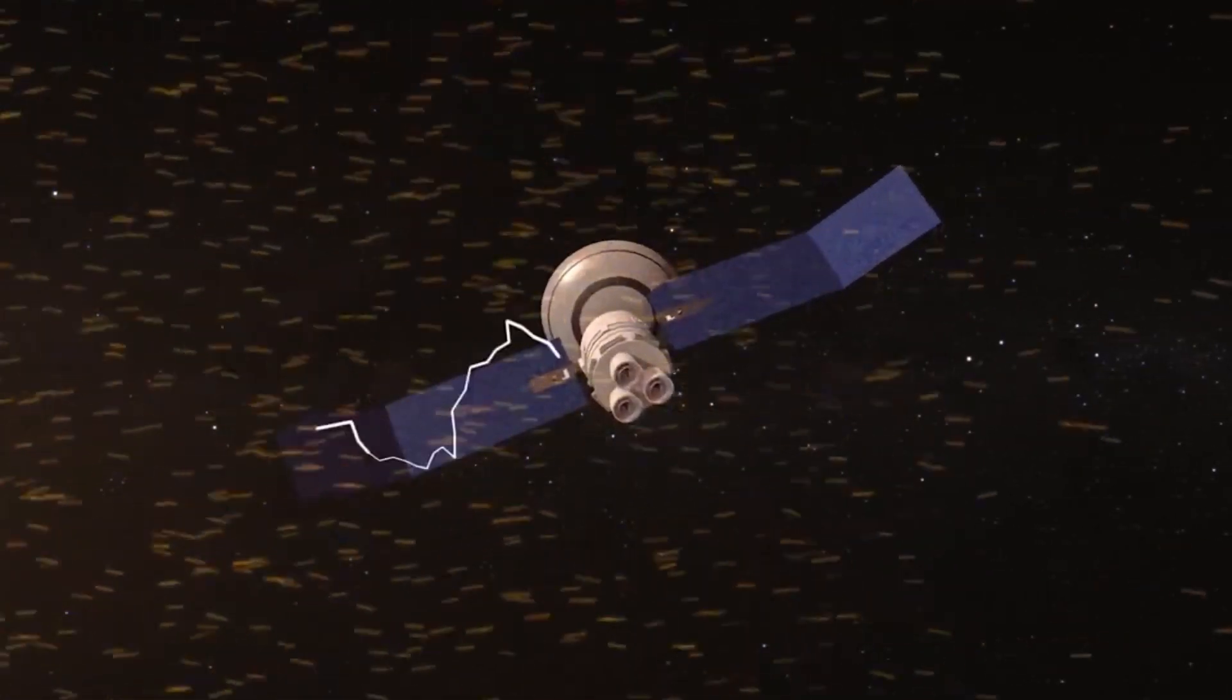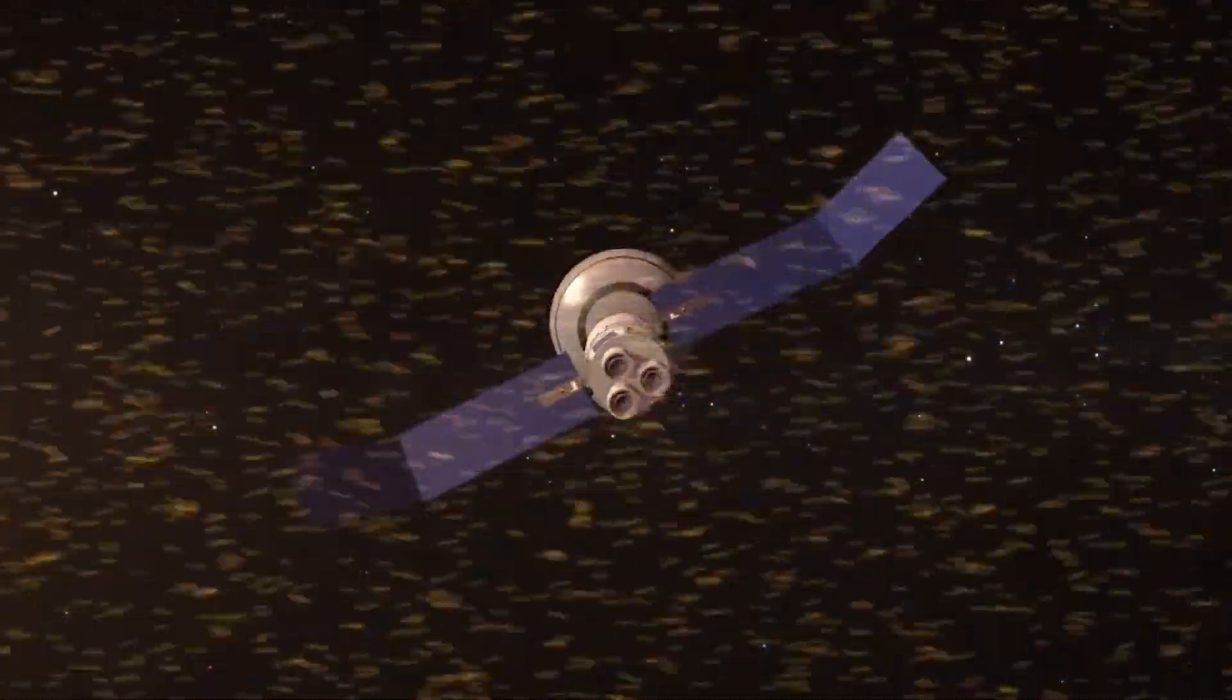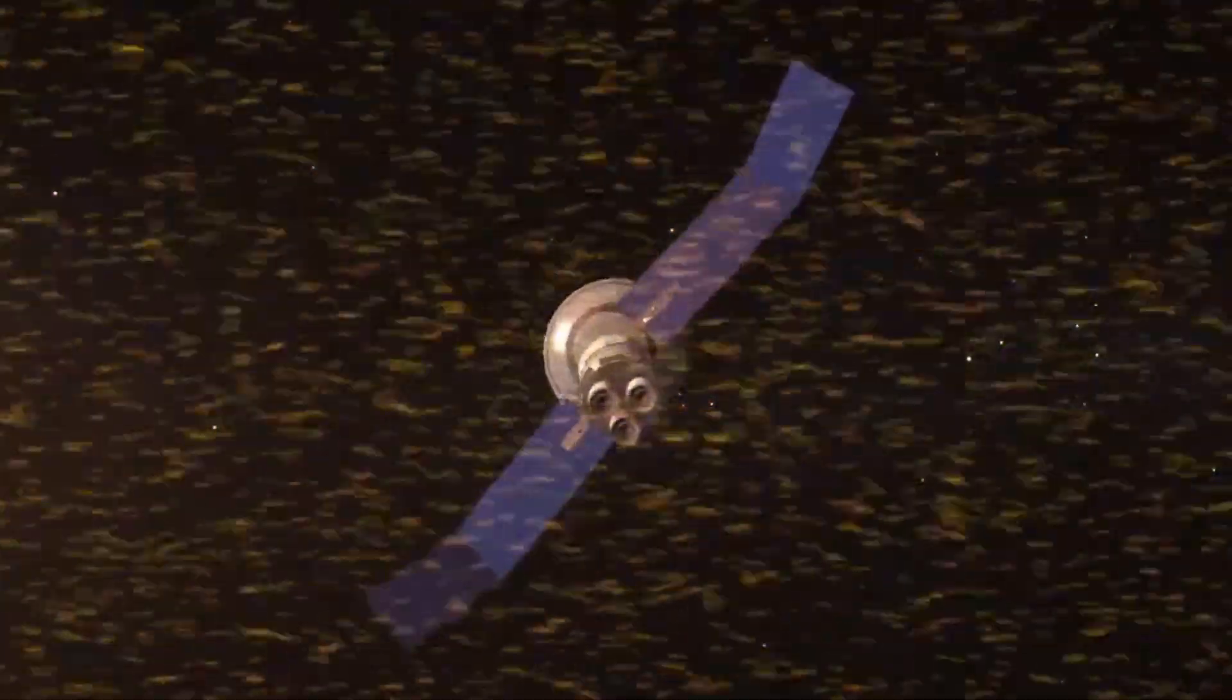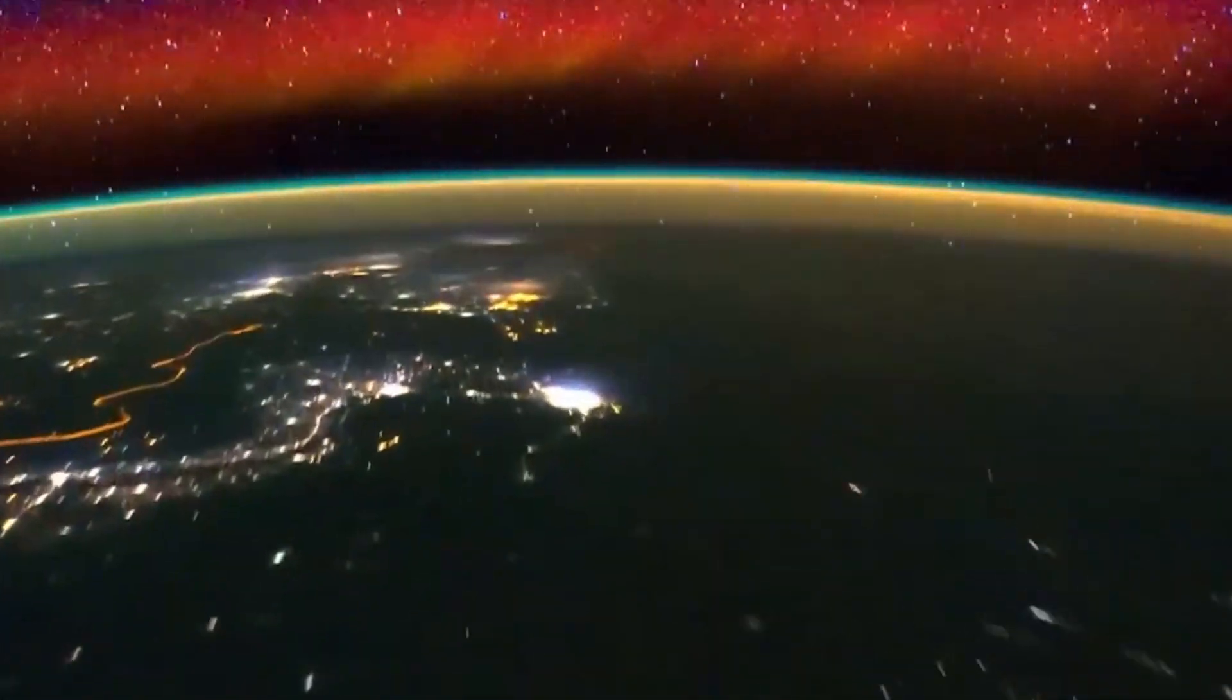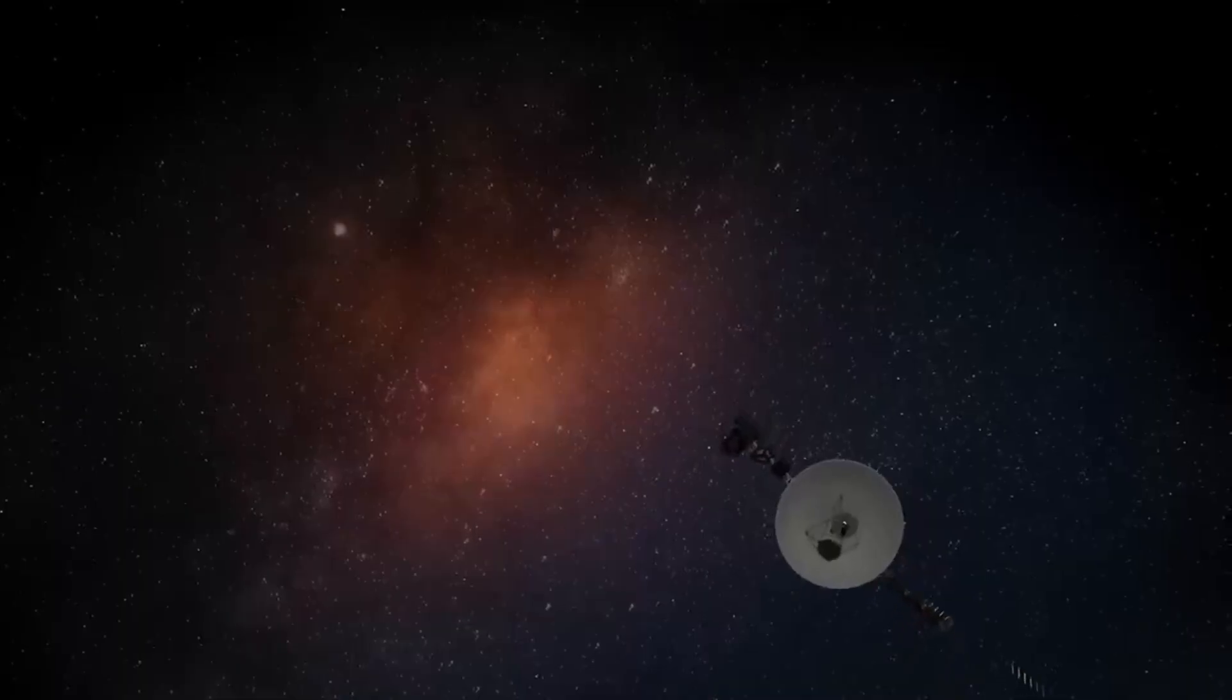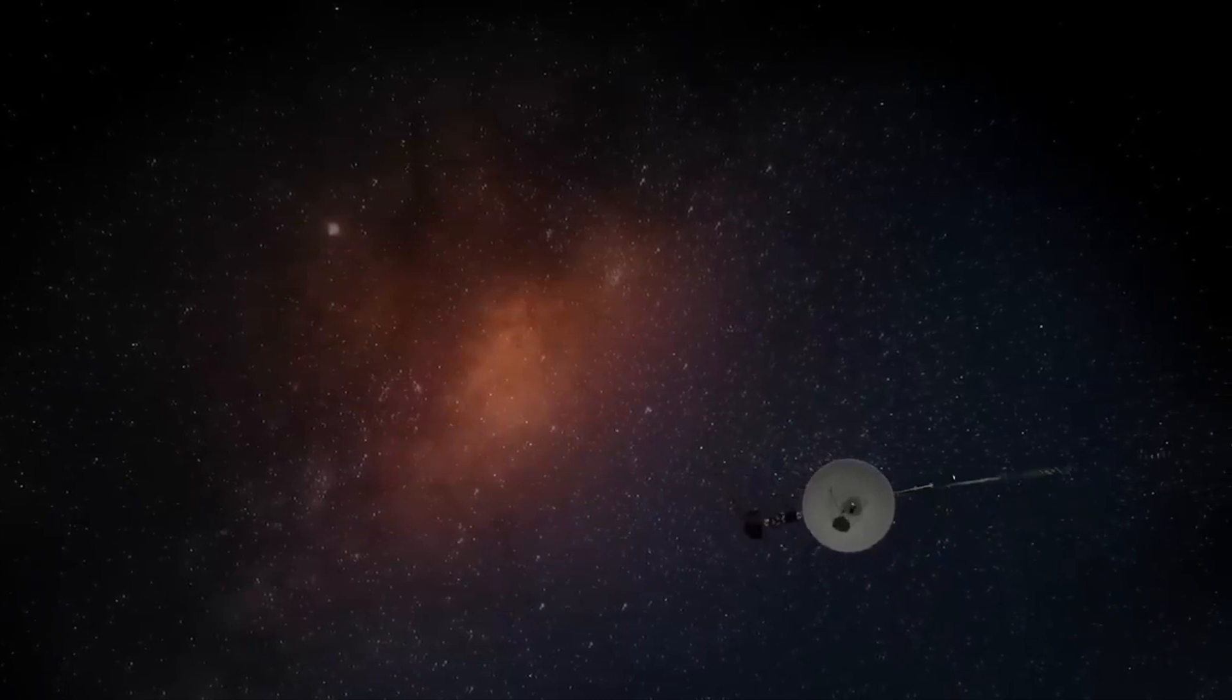Voyager 1 in 2003 entered the edge of the solar wind when its instruments indicated that particles around it were moving subsonically, having slowed down after traveling far from the Sun. Then, about a year ago, the probe went completely silent.